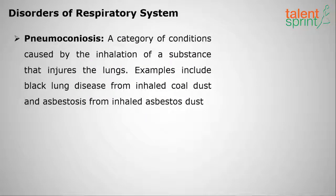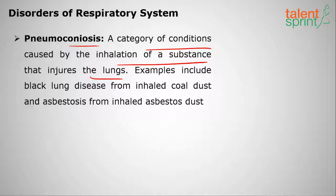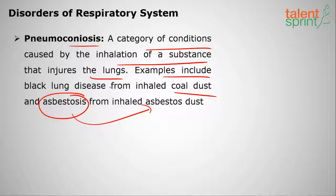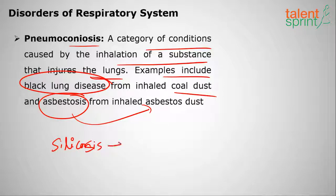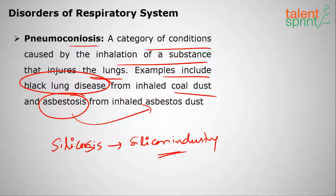Pneumoconiosis is a category of conditions caused by inhalation of substances that injure the lungs. Examples include black lung disease from inhaled coal dust in coal mining areas, asbestosis from asbestos inhalation, and silicosis from silica dust in the silicone industry. These are the respiratory disorders caused by various industries. I hope you have learned enough about the human respiratory system — I'll meet you next time, take care, bye.